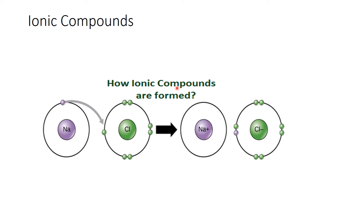So why are they called ionic compounds? Because sodium has one electron in the outermost shell. If you see the configuration of sodium, it has atomic number 11 and its configuration is 2, 8, and 1. This is the electronic configuration of sodium. So this one electron it has is in the outermost shell, meaning its shell is not complete.